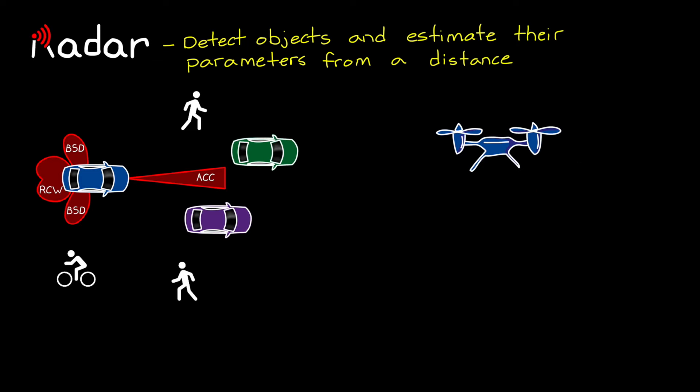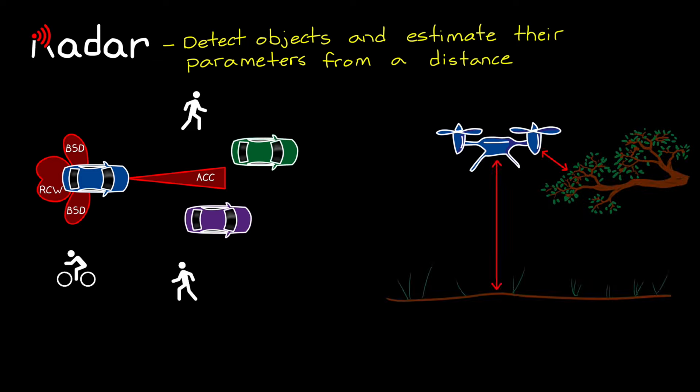For flying vehicles, radar is used for object avoidance and for measuring altitude, and there are a host of other uses for commercial vehicle applications.